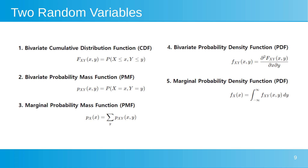The bivariate PDF is the joint density function for continuous random variables X and Y. It represents the density of joint probability at specific points and is obtained by taking the second partial derivative of the bivariate CDF with respect to both X and Y. The marginal PDF of X is calculated by integrating the joint PDF over all possible values of Y, providing the probability density of X alone independent of Y.